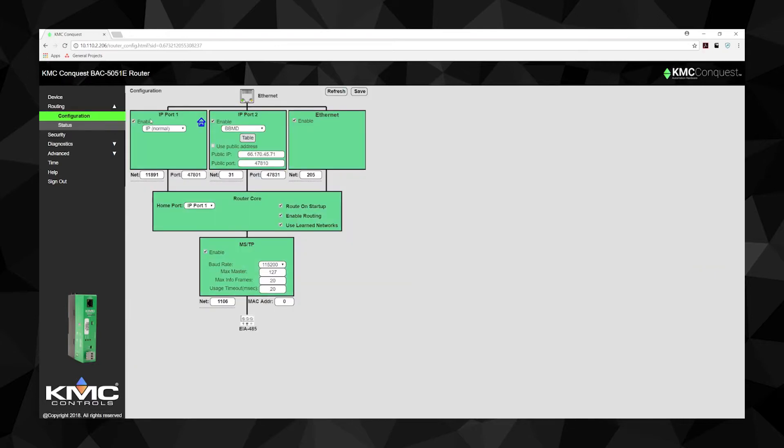Here under each IP port, you will find a drop-down menu with options including BBMD, foreign device, and pad. Let's take a look at what each of these settings mean and when to use each one.